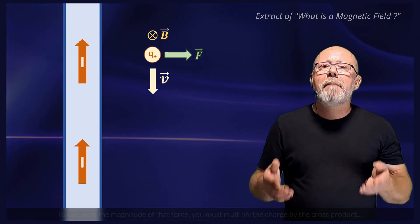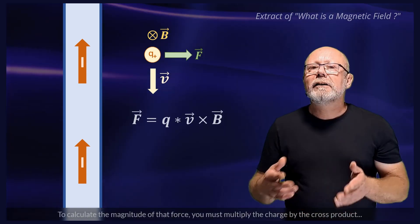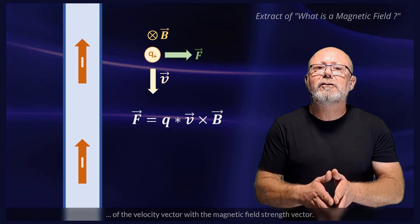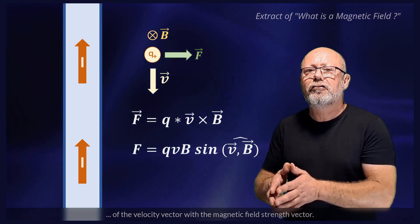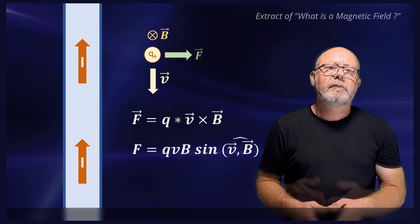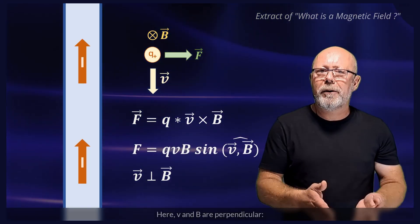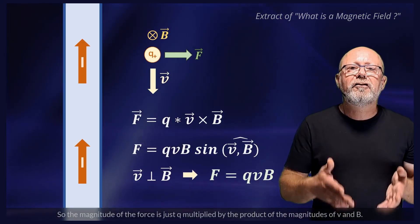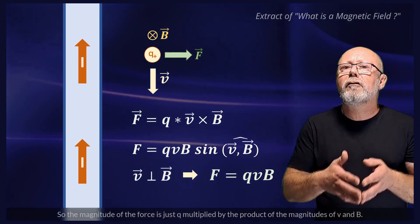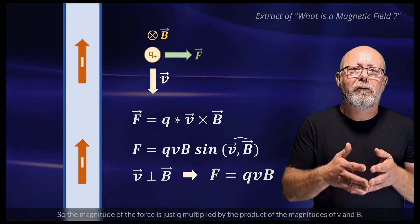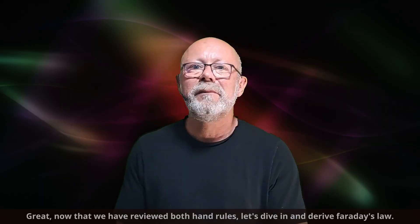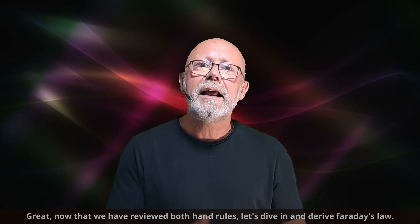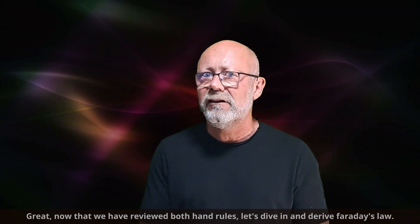To calculate the magnitude of that force, you must multiply the charge by the cross product of the velocity vector with the magnetic field strength vector. Here, v and B are perpendicular, so the magnitude of the force is just q multiplied by the product of the magnitudes of v and B. Now that we have reviewed both hand rules, let's dive in and derive Faraday's law.